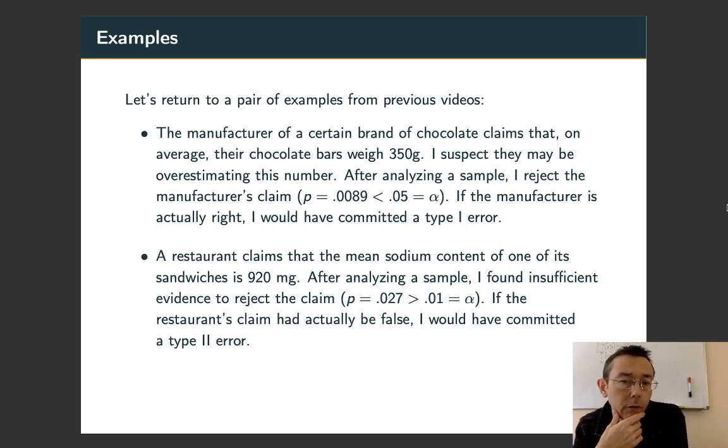The manufacturer of a certain brand of chocolate claims that on average their bars weigh 350 grams. I suspect they might be overestimating the number. I get a sample and I reject the manufacturer's claim with a p-value of .0089. Now suppose that the manufacturer was actually right and their chocolate bars do have an average weight of 350 grams. In that case, I would have committed a type 1 error or false positive.